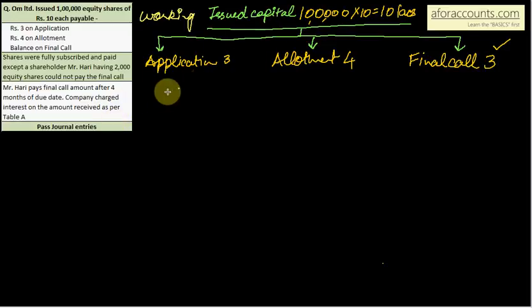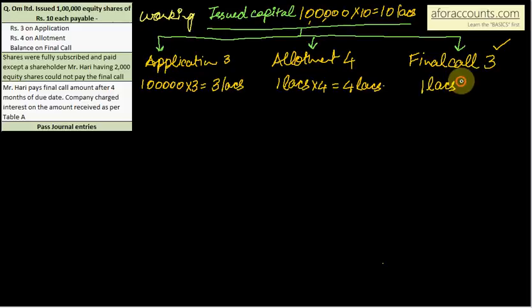1 lakh shares at 3 rupees application, so 1 lakh into 3 equals 3 lakhs. Then allotment 4 rupees, so 1 lakh into 4 equals 4 lakhs. And final call per kitna chahiye tha, 1 lakh into 3 equals 3 lakhs. Aryar kya hua, matlab late mila hai. So 2,000 shares into 3 equals 6,000 per interest charge karna padega.